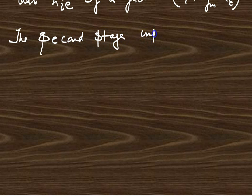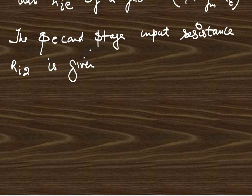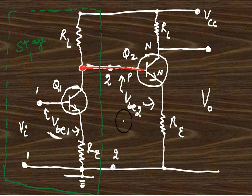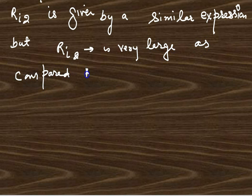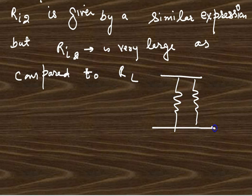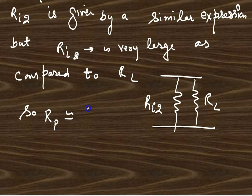Similarly for the second stage, the input resistance Ri2 can be calculated. Ri2 will be very, very large compared to RL. Now when two resistances are in parallel, the equivalent resistance comes closer to the lower value. So RL will be very effective.